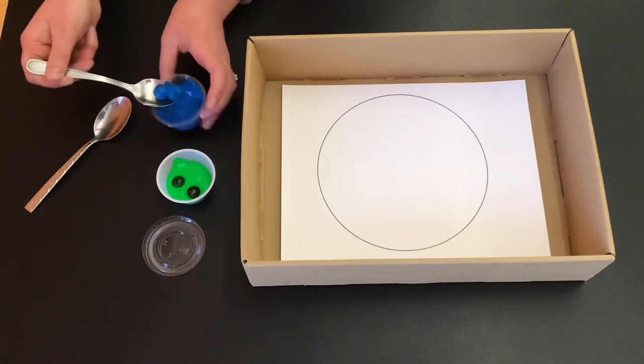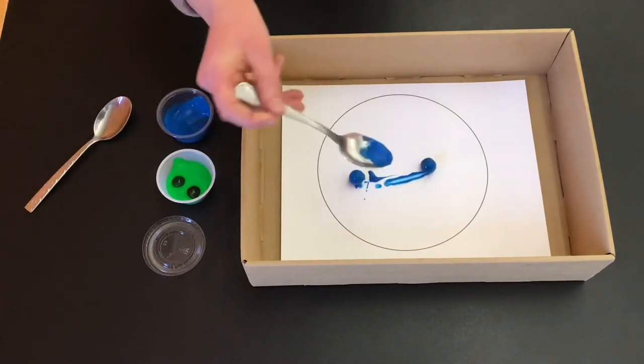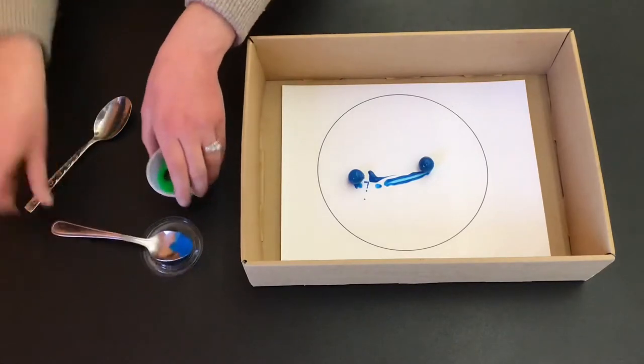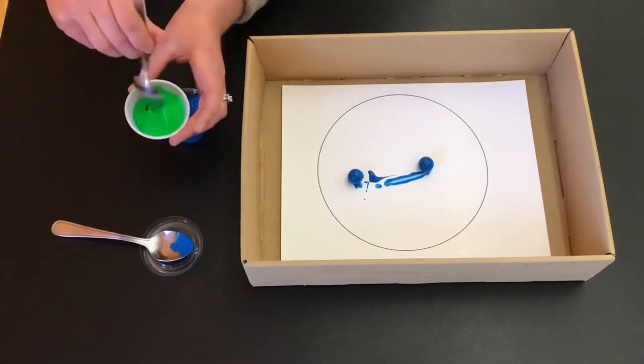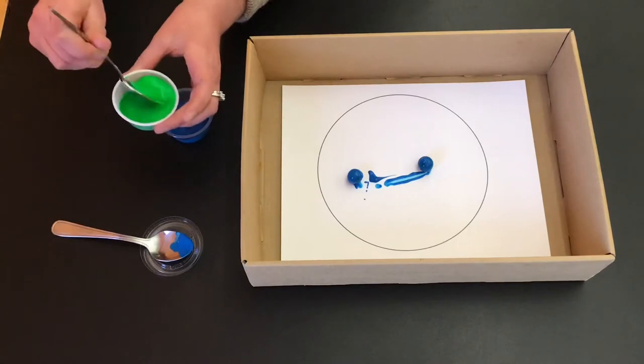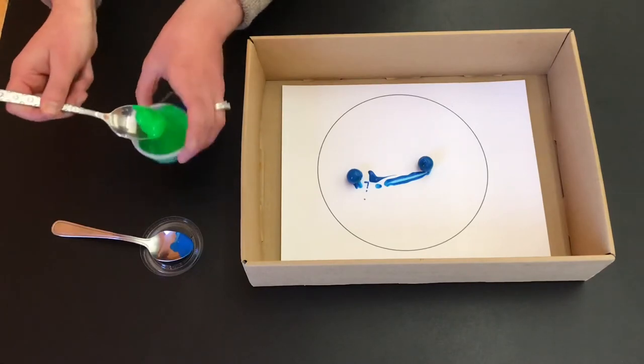To prevent getting too messy, I'm going to use a spoon to drop the marbles onto my paper. I'll do the same with the green. You can always go back to add more paint if you think your painting needs it.